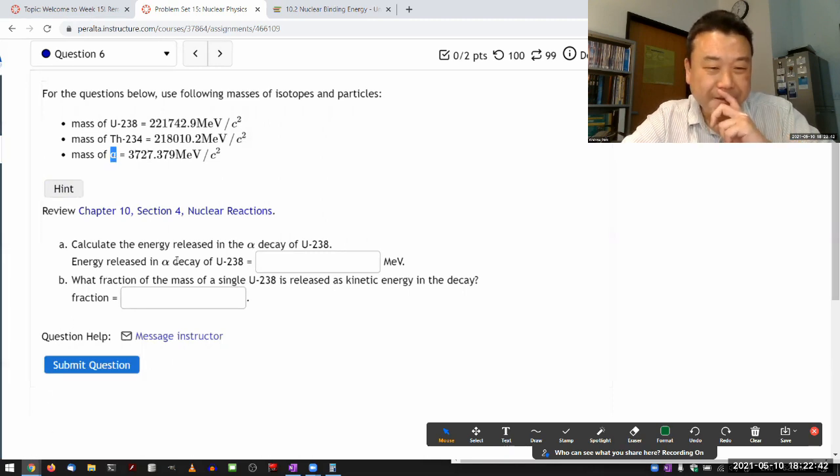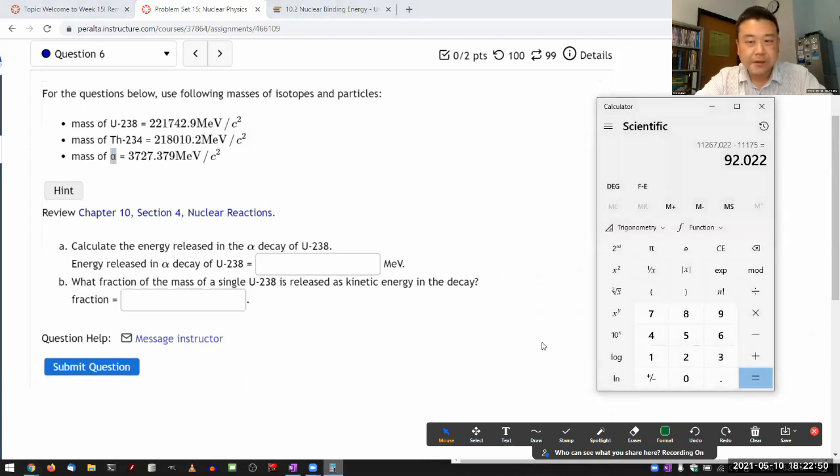So let me try this calculation. For energy released in alpha decay of uranium-238, the calculation based on those numbers should be 221742.9 minus the mass of thorium 218010.2 minus the mass of alpha particle 3727.379. And I have a feeling that if I just put in this, it should be incorrect.